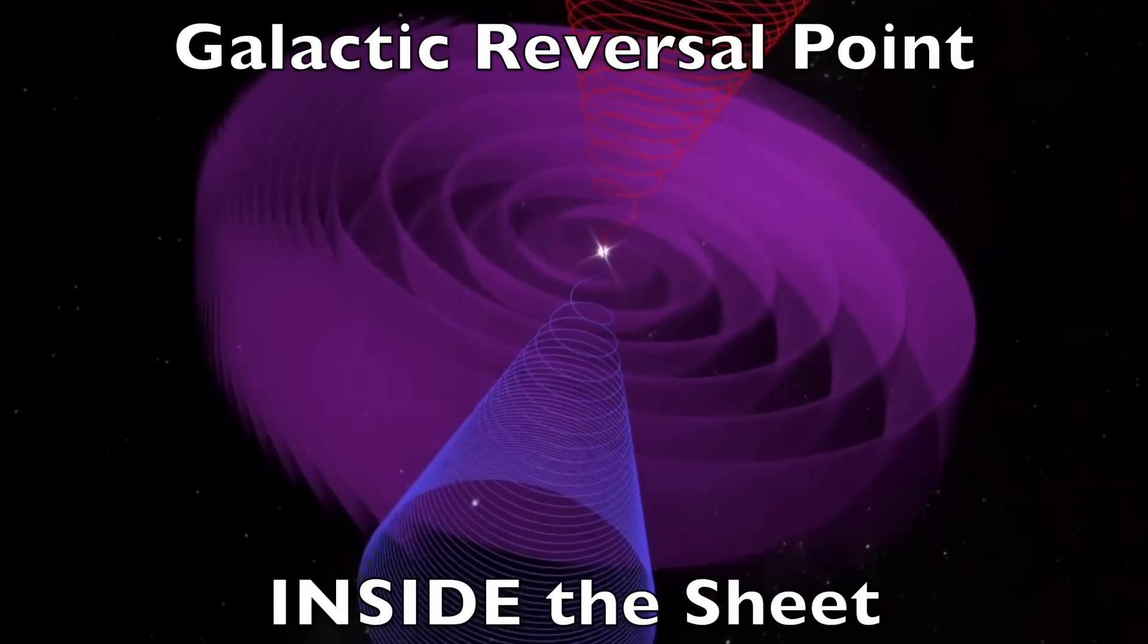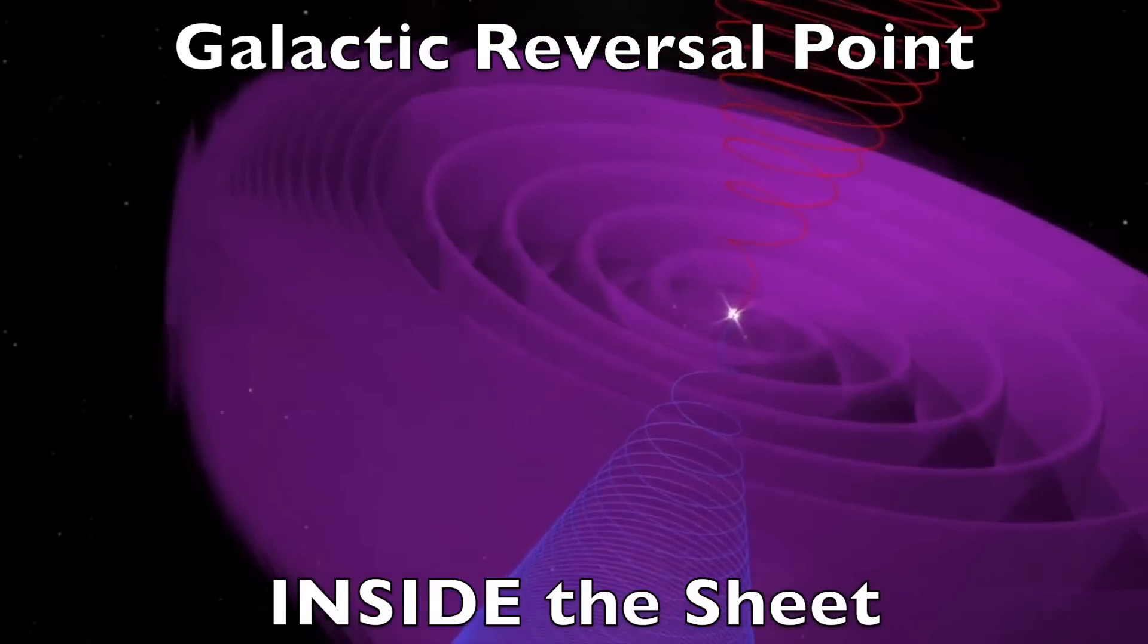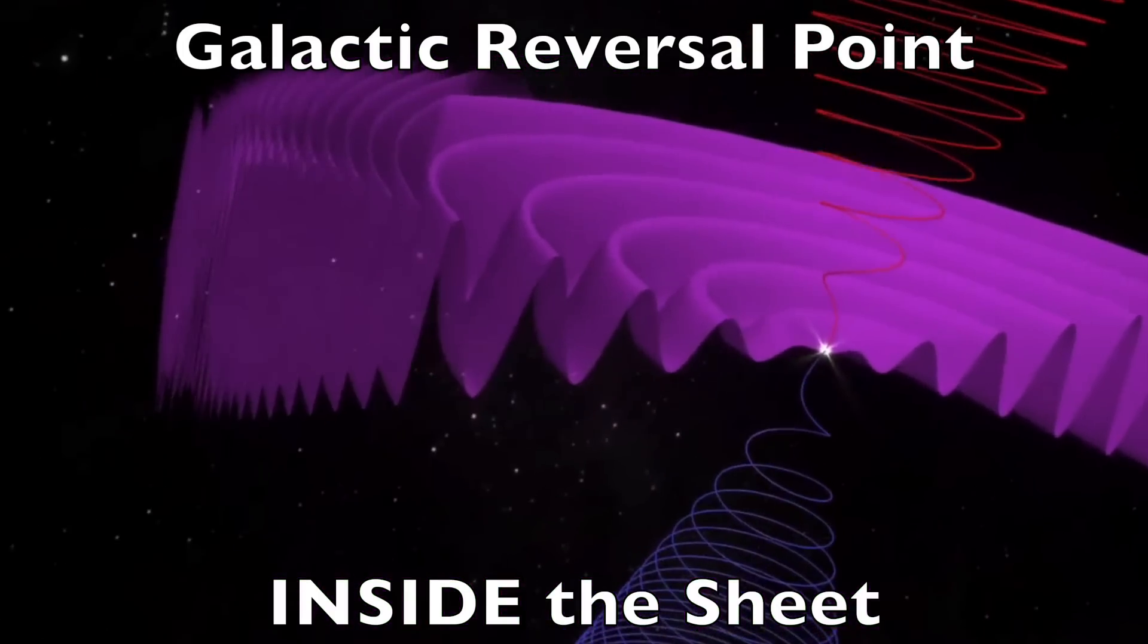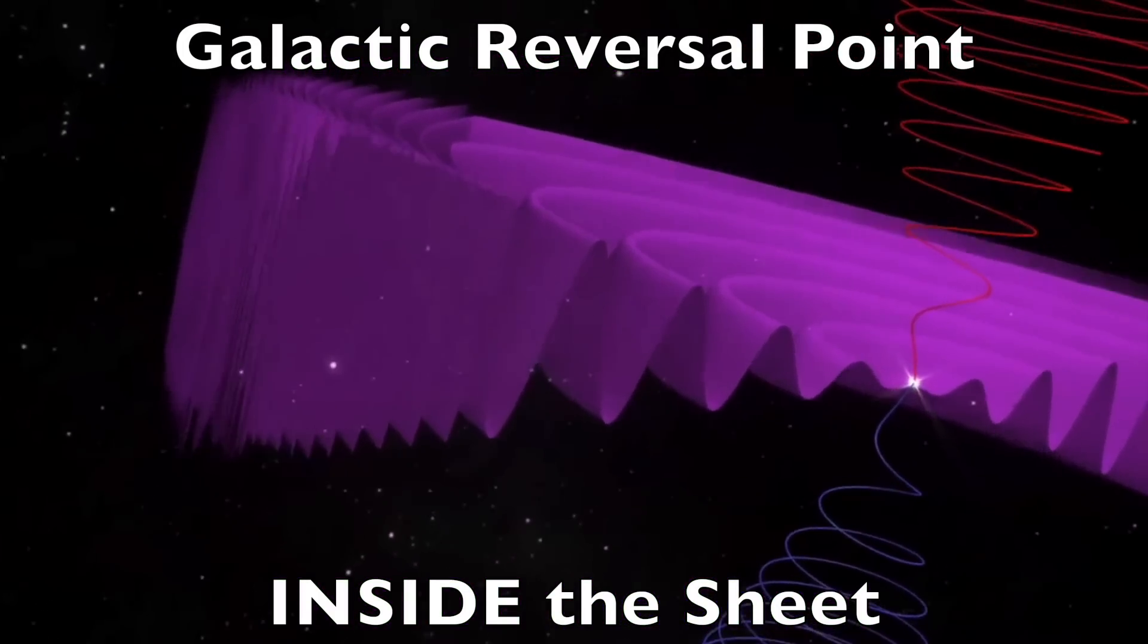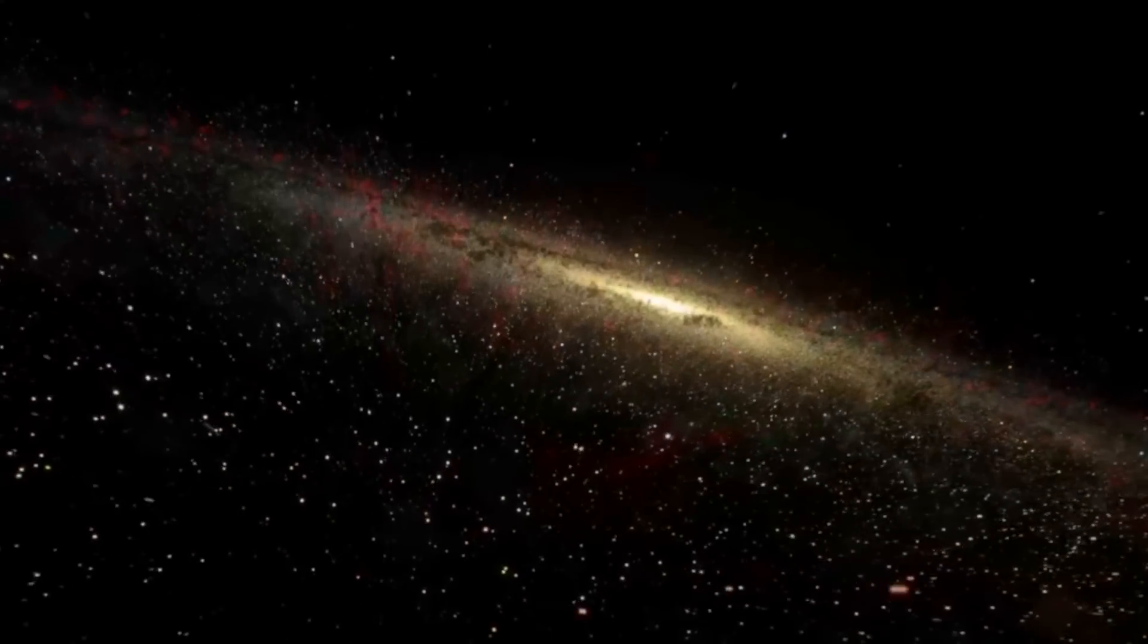We have always supported the idea that the dust was what would help trigger the solar micronova. The idea had been that the galactic magnetic reversal point, which is in the sheet, was what was causing the solar system magnetic shift, including the magnetic excursion ongoing at Earth.